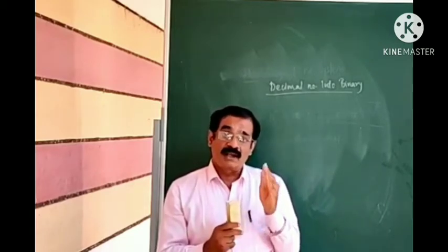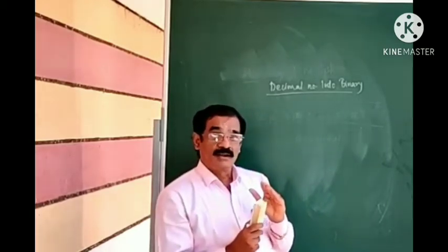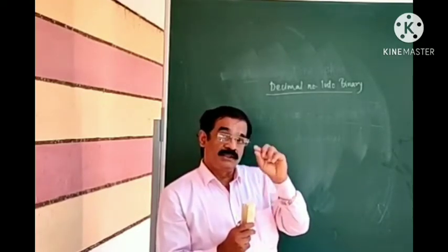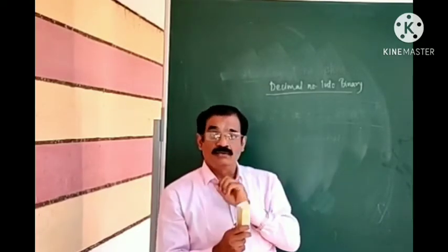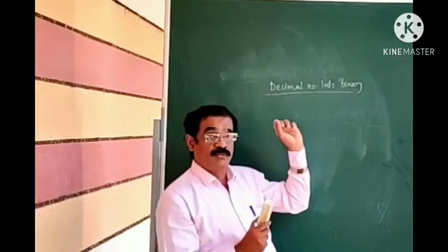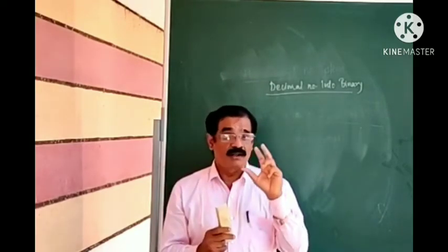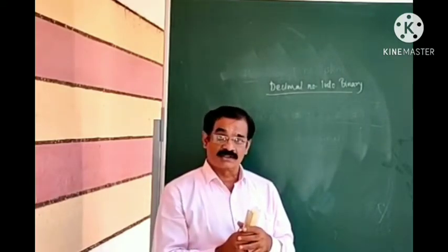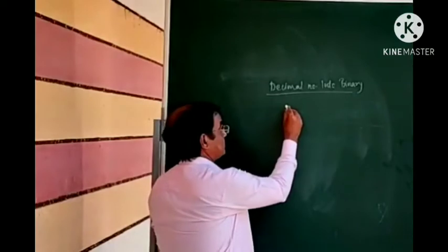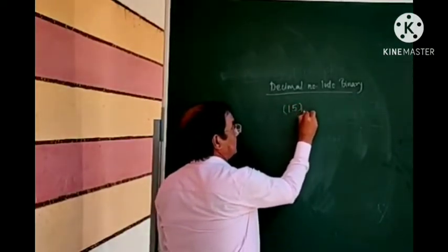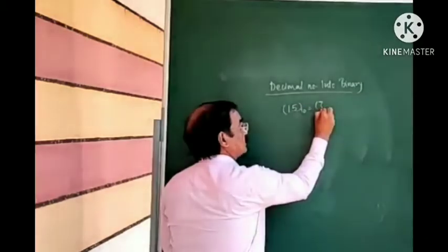Then write down the remainder and successively divide again. We will take the decimal to binary conversion as an example. For example, suppose 15 decimal — what is its binary equivalent?